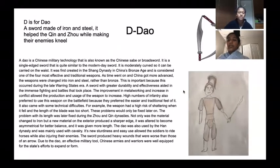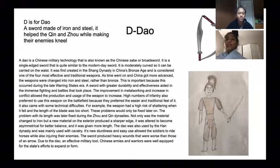D is for the Dao, a sword made of iron and steel, which helped the Qin and Zhou while making their enemies kneel.